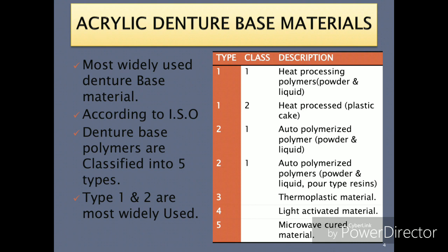According to ISO, the acrylic denture base materials are classified into five types. Type one has two subdivisions: either powder-liquid formulation or plastic cake formulation. Type two is auto-polymerizing or self-cure acrylic in the form of powder and liquid, or either in the form of pour-type resin. Type three is thermoplastic acrylic. Type four is light-activated acrylic material, whereas type five is microwave-cured acrylic denture base material.